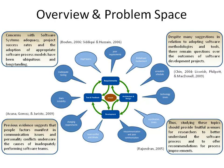Concerns with software systems adequacy, project success rates, and the adoption of appropriate software process models have been ubiquitous and long-standing. Despite many suggestions in relation to adopting software methodologies and tools, there remain questions over the outcomes of software development projects. Previous evidence suggests that people factors manifest in communication issues and personality conflicts underscore the causes of inadequately performing software teams.